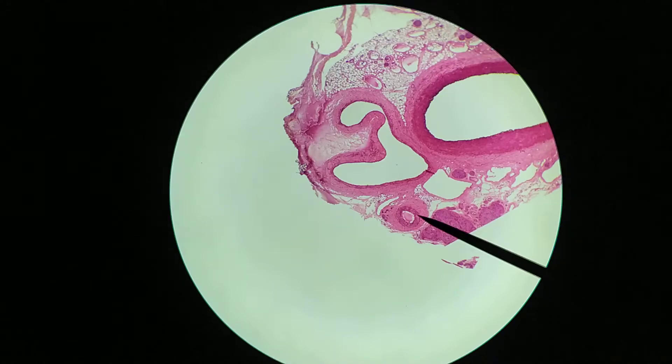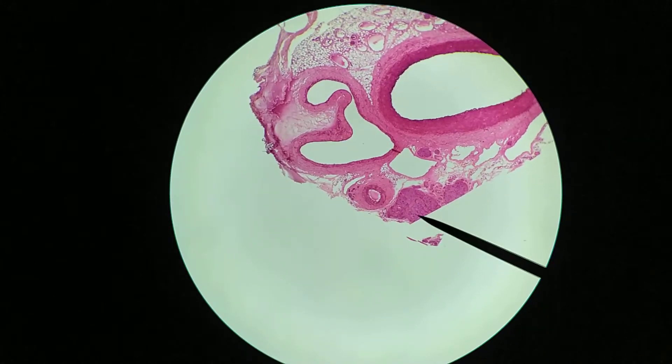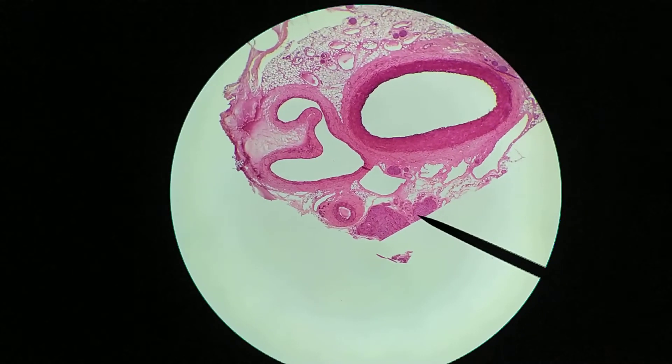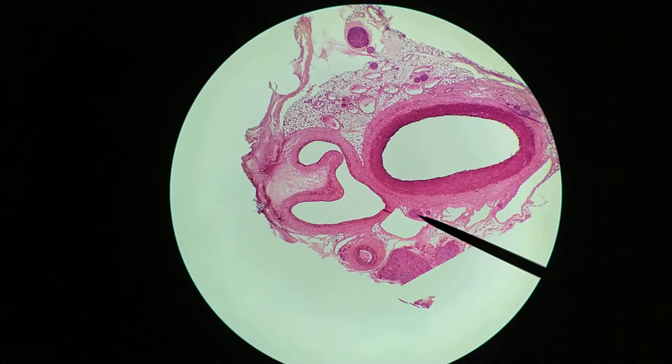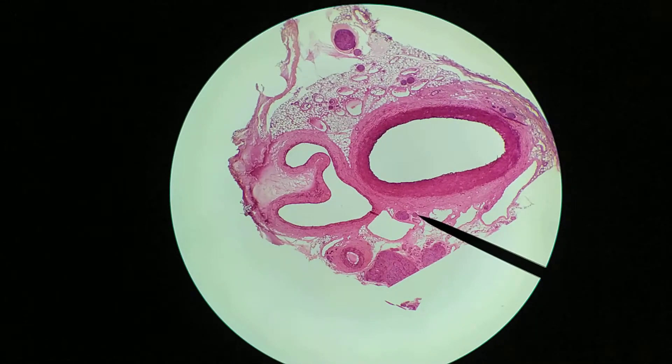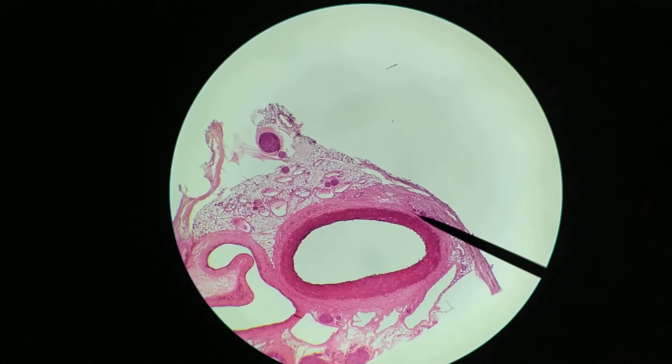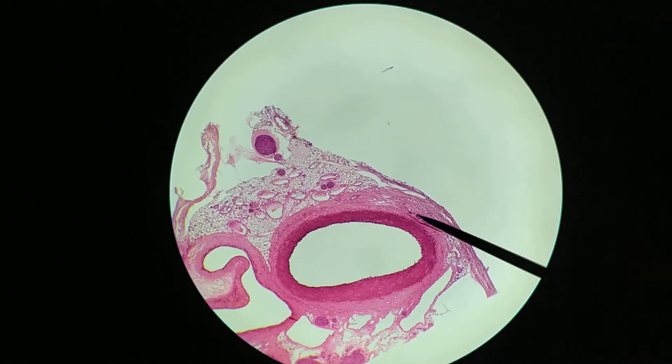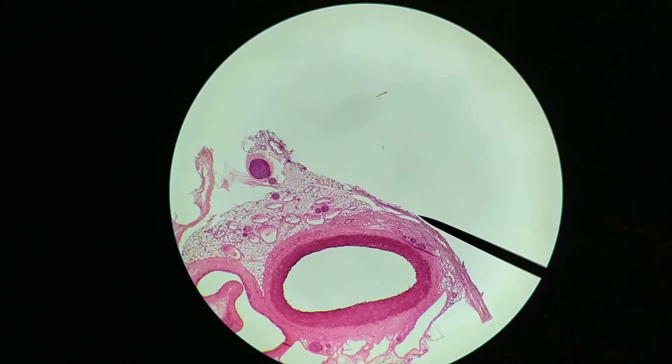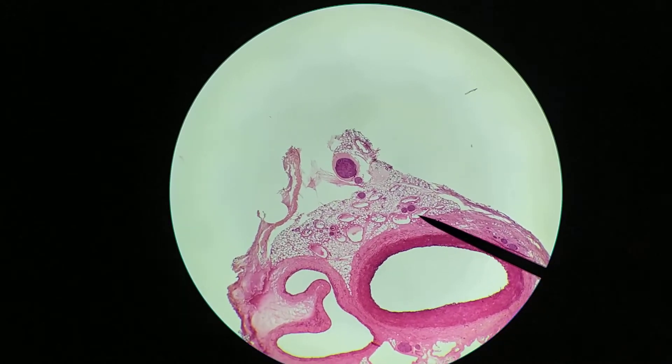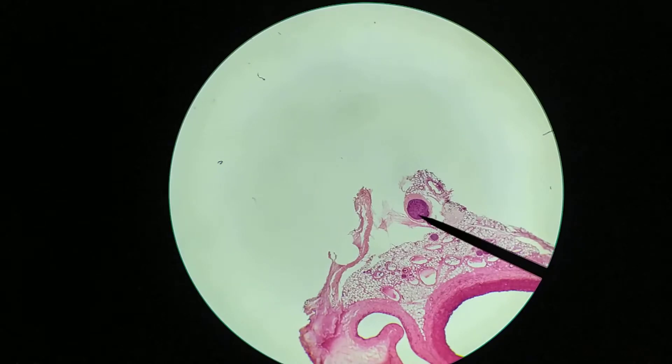You'll also find a few other structures on this slide. For example, this right here is a nerve. Here's another nerve. Here's a smaller nerve bundle here and here. There's two more just to the right of this artery, a couple more nerve bundles, a couple more up here, and a larger one up at the top here.